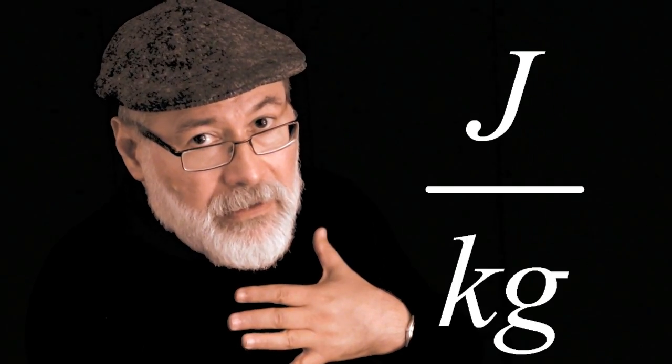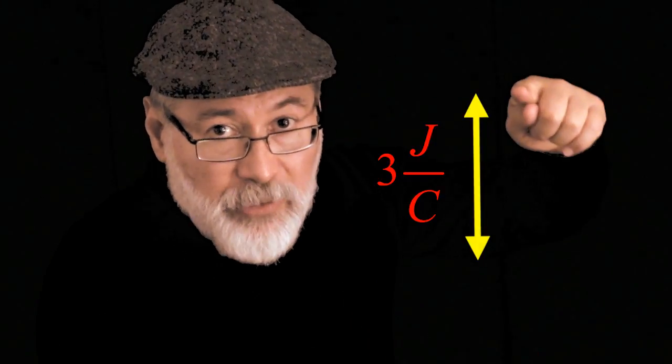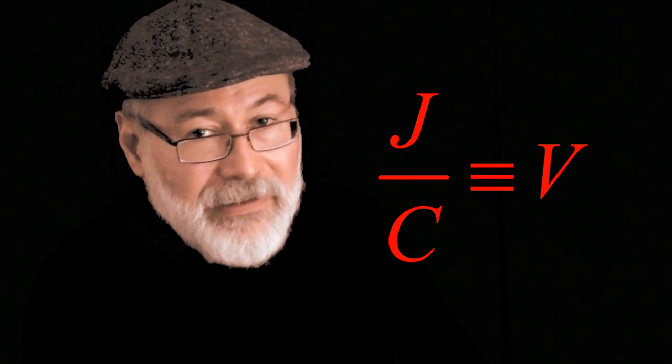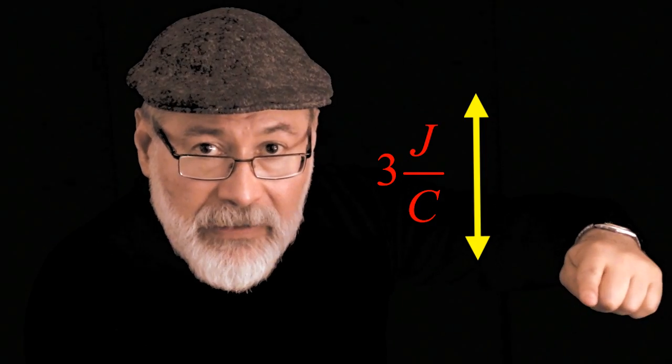Those differences in electric heights are not measured the way we measure differences in heights in our gravitational field — not in joules per kilogram. We measure those differences in electric height inside the circuit in joules per coulomb. We say: inside the wire, this point here is 3 joules per coulomb higher than this one. Joules per coulomb — that is the volt. When we say a point in the circuit is 3 volts higher than another one, what we mean is that this one is 3 joules per coulomb higher than this one.